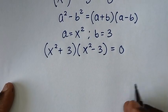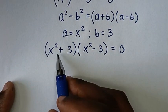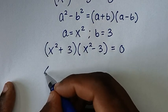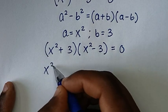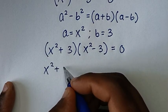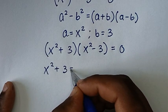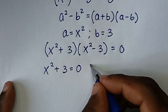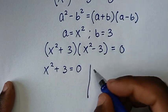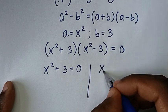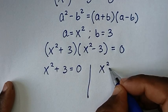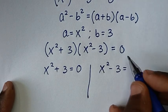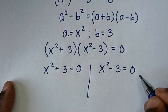From here we have two solutions: the first solution is x² + 3 = 0, and the second solution is x² − 3 = 0.